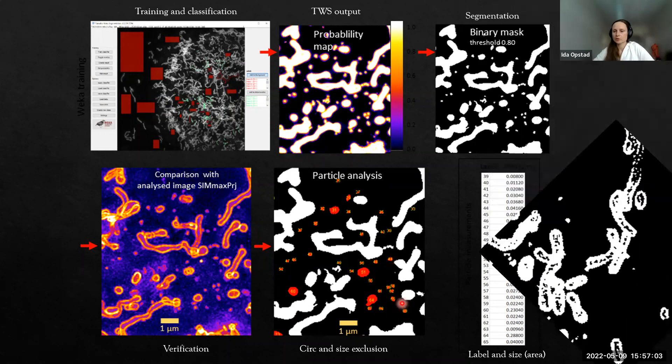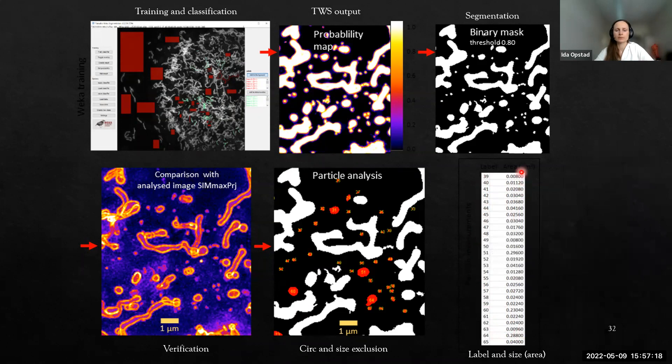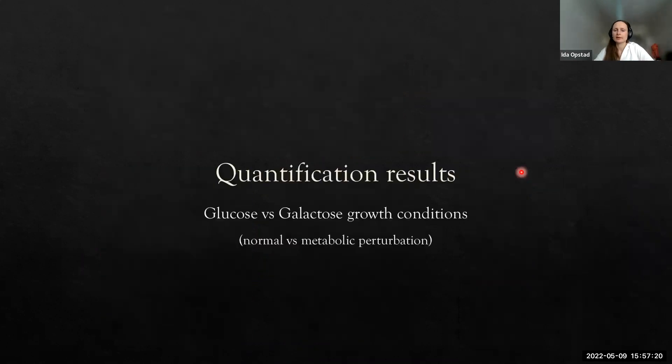It's a much better segmentation than the hard thresholding. What was shown there is just counting the different vesicles and the area.